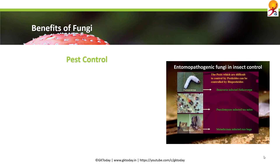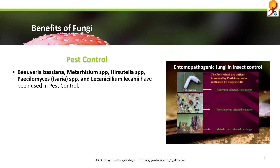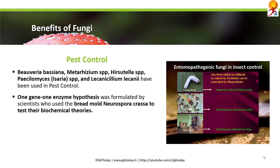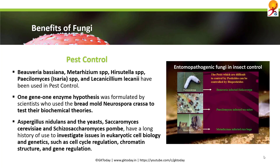In pest control, Beauveria bassiana, Metarhizium spp., Hirsutella spp., Paecilomyces spp., and Lecanicillium lecanii have been used. The one gene–one enzyme hypothesis was formulated by scientists using the bread mold Neurospora crassa. Aspergillus nidulans, Saccharomyces cerevisiae, and Schizosaccharomyces pombe have a long history of use to investigate eukaryotic cell biology and genetics, including cell cycle regulation, chromatin structure, and gene regulation.